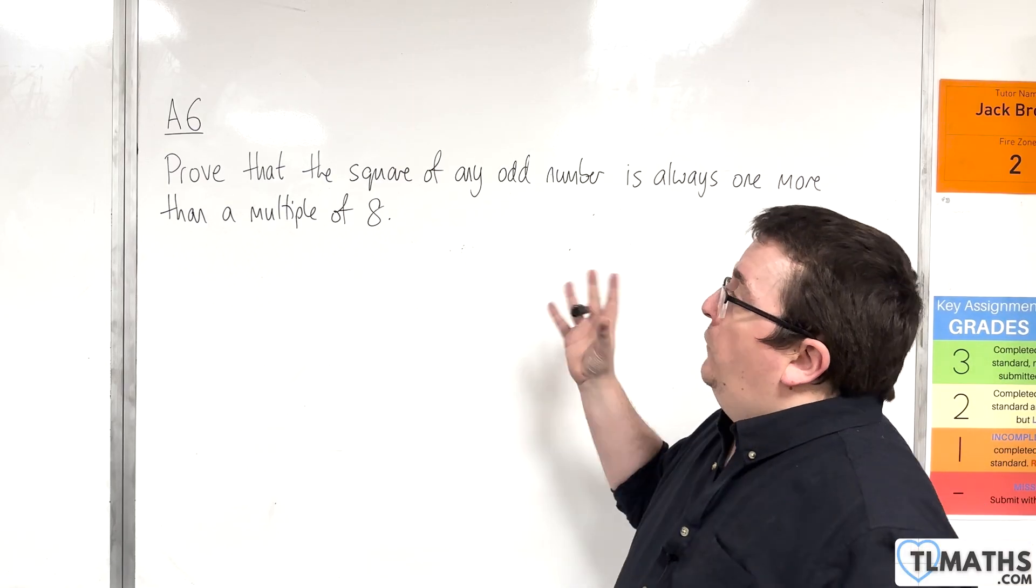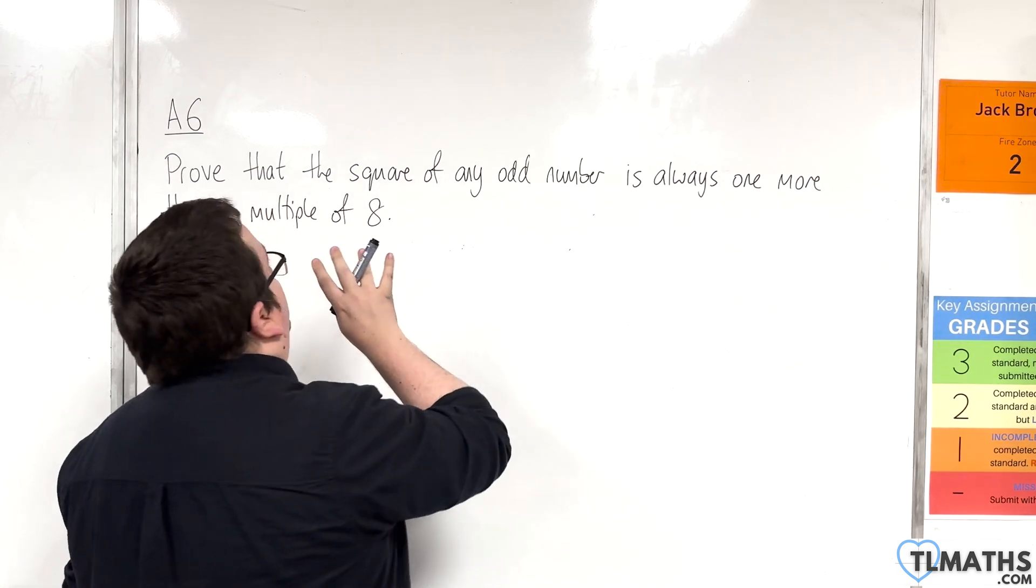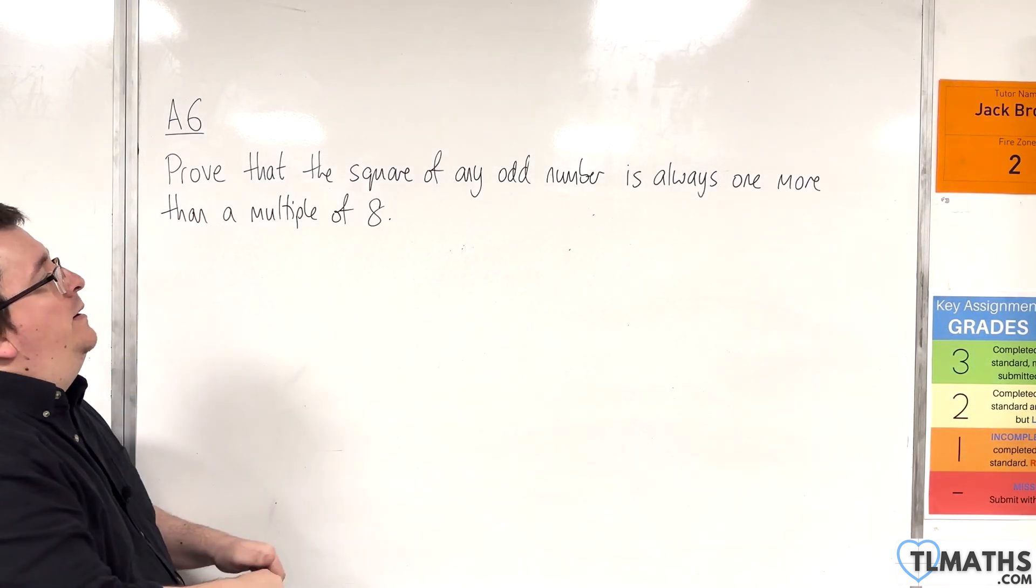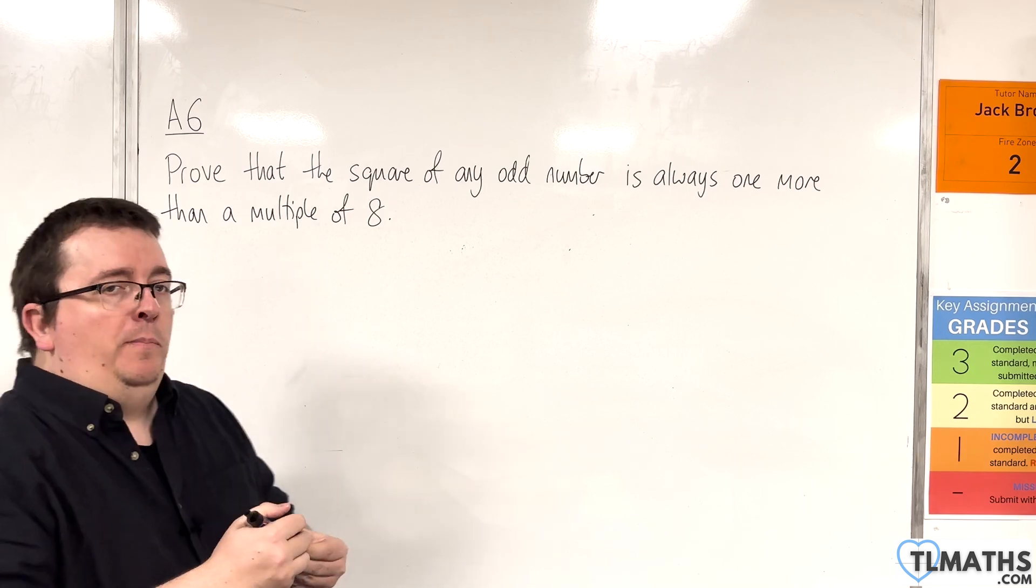In this video we want to look at this proof where we're proving that the square of any odd number is always one more than a multiple of 8.